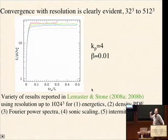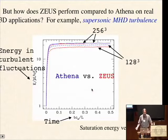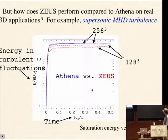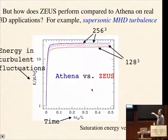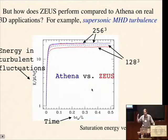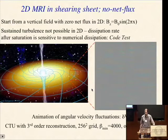We can ask: does Zeus and Athena give you the same converged numerical solution? The answer is yes. The blue line shows Athena results and the red line shows Zeus results. By 256 cubed, the results are extremely similar, converging to the same value within a fraction of a percent. Athena converges faster — the 128-cubed Athena result lies between Zeus 64 and 128 cubed — so Athena is slightly less dissipative and needs less resolution. But you get the same converged result, which is very reassuring for this three-dimensional supersonic turbulence problem.